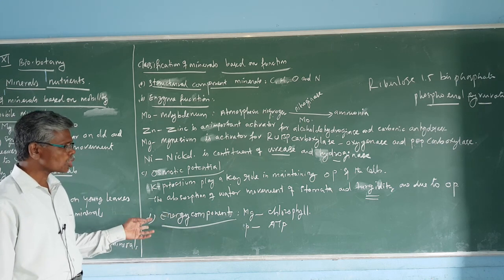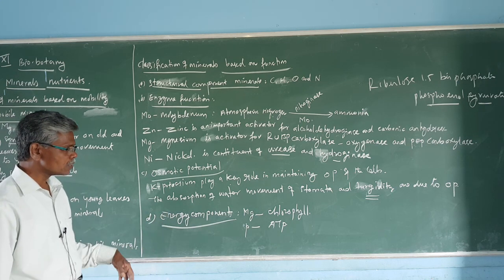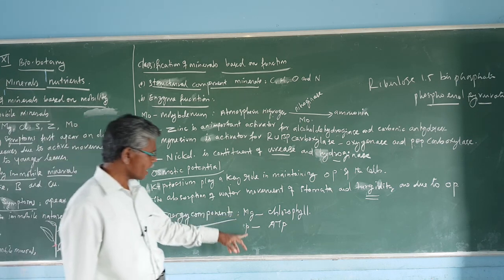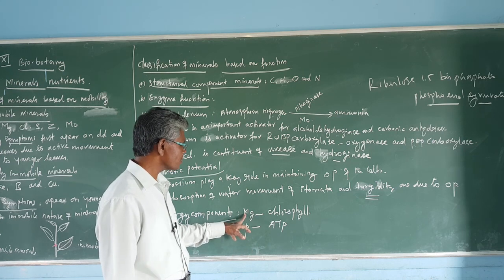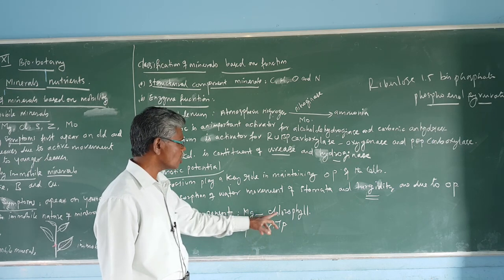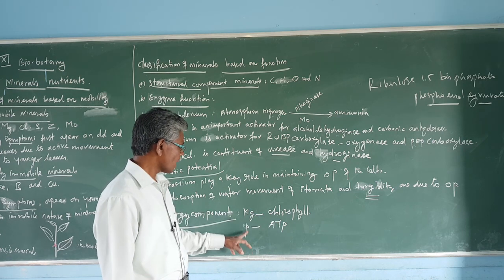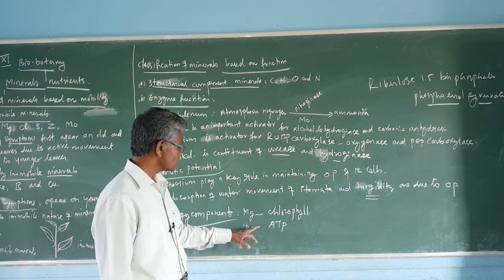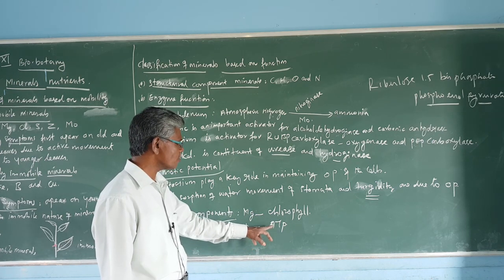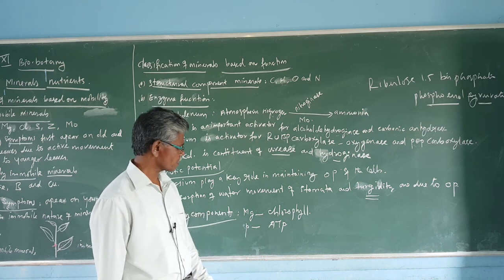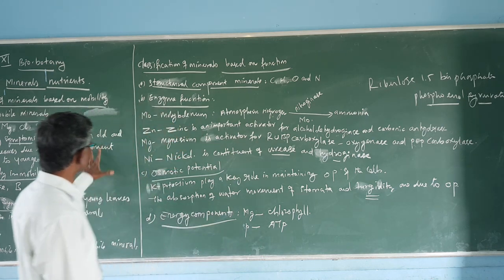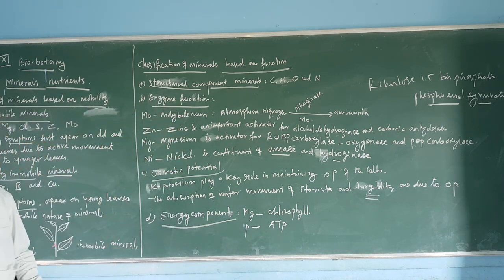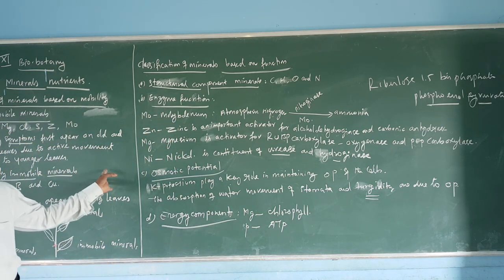Finally, the energy component category involves magnesium and phosphorus. Magnesium plays a key role in chlorophyll formation, and phosphorus is involved in the formation of ATP — the energy currency of the cell. All of this is very essential for your examination. Thank you.